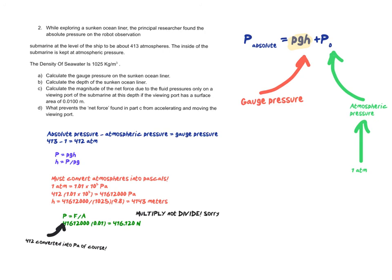Part D then says, what prevents the net force found in part C from accelerating and moving the viewing port? Now it's important to realize that from part C, that's not actually a true net force because we have to keep in consideration that the glass or the viewing port window is connected to the actual submarine body. And so we're ignoring some other forces there, like the normal forces that are pushing against the window and the framing. And so really, it's that part C is not taking into account all the forces. It's just looking at the force from the pressure.